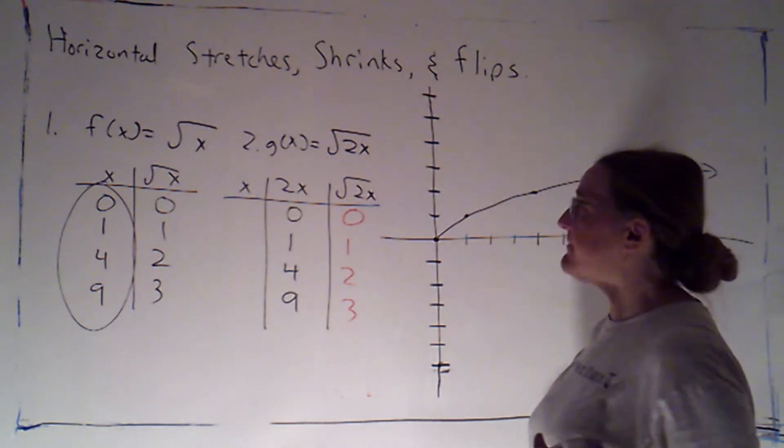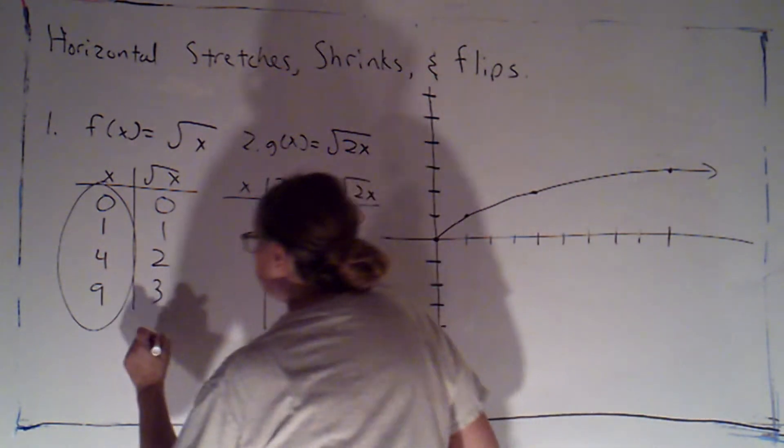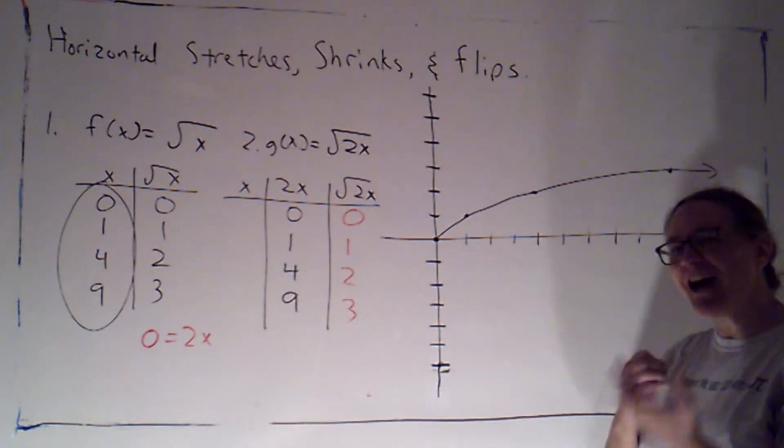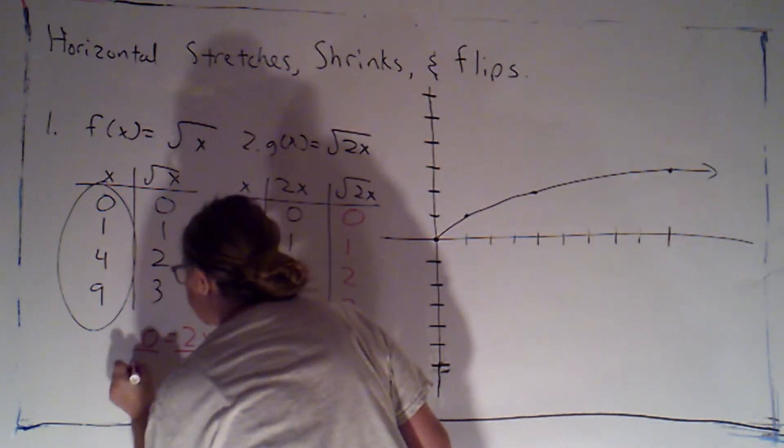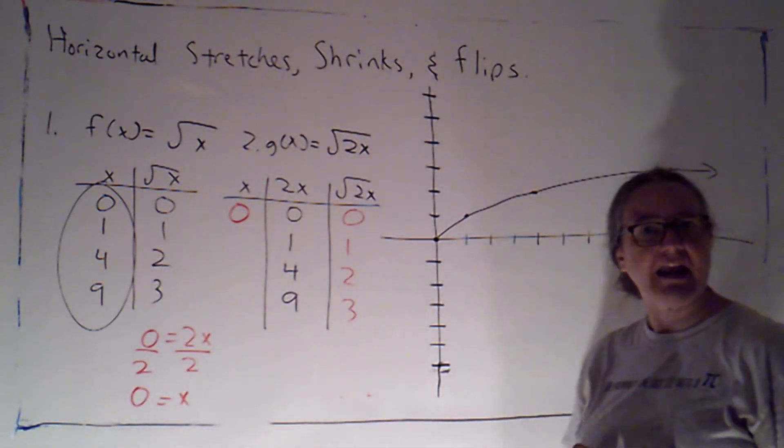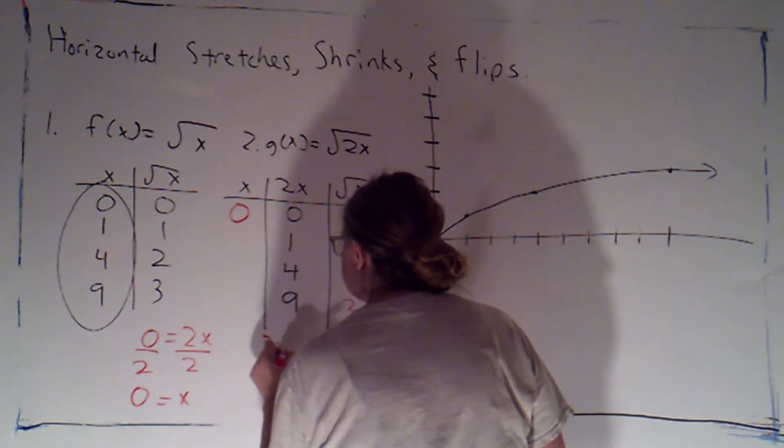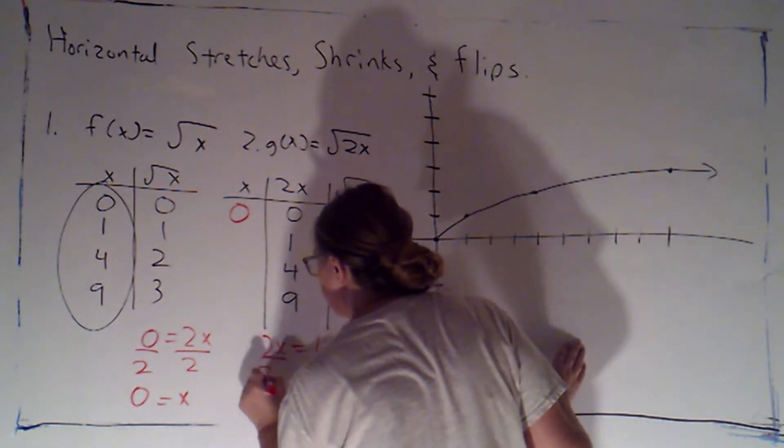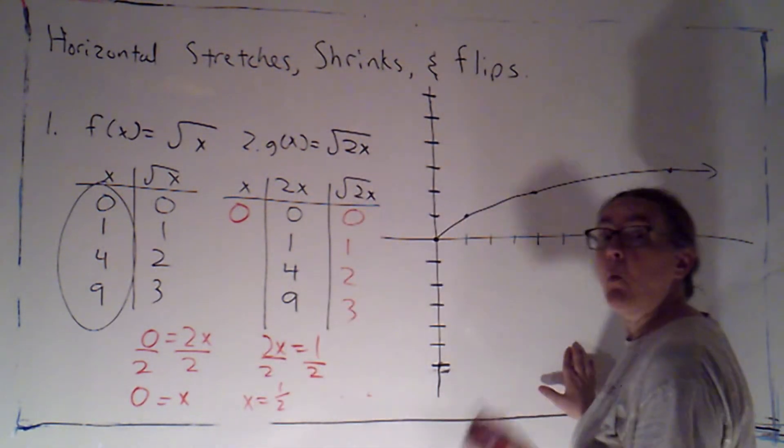To figure out what those x values are, I need to recognize that these are the values of 2x. So I can write out an equation. Here, 0 is equal to 2x. To solve for x, I need to undo that multiplication by 2, so I'm going to need to divide both sides by 2. Now, 0 divided by 2 is still 0, so that doesn't actually change that x value. But with this next one, when 2x is equal to 1, to solve for x, again I need to undo the multiplication by 2, which means I'm going to divide by 2. So x will equal 1 half.